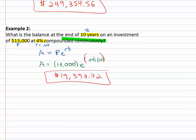Continuous interest, interest upon interest upon interest compounded infinitely. We use the equation p e to the r t.